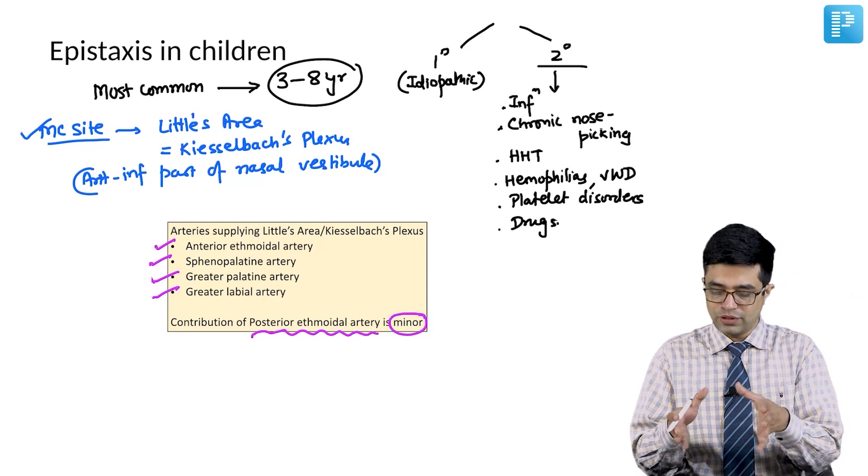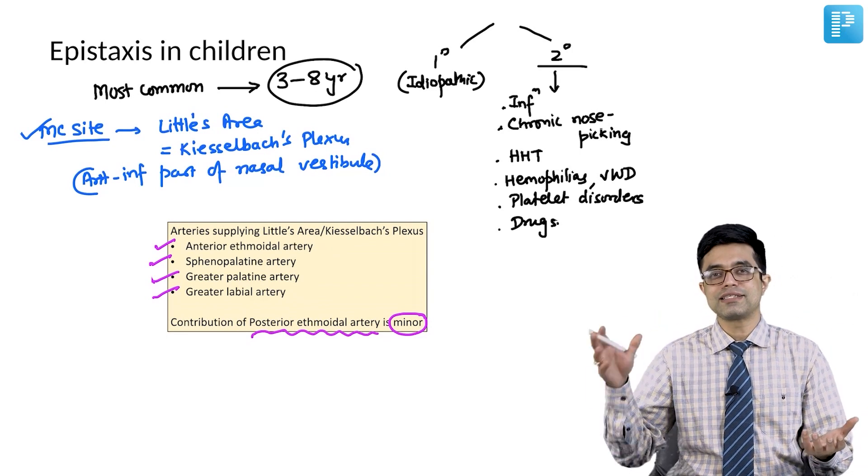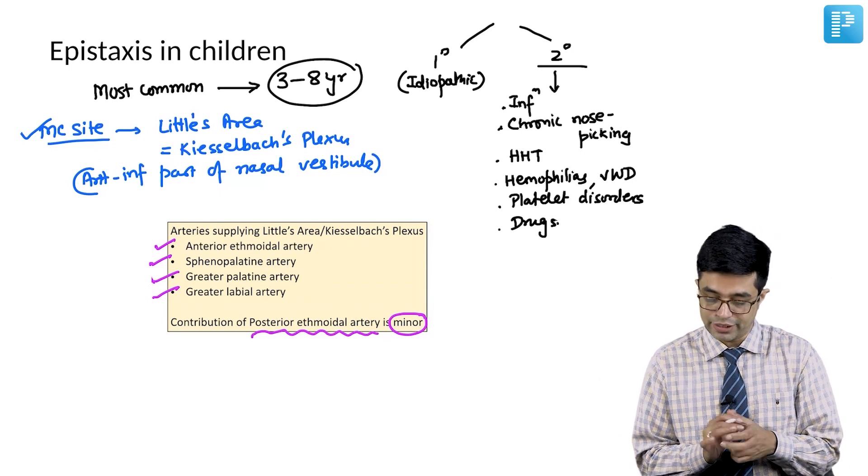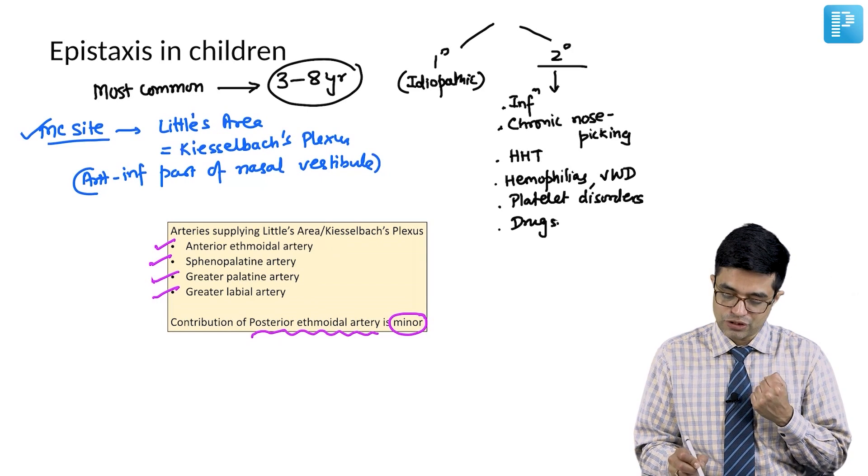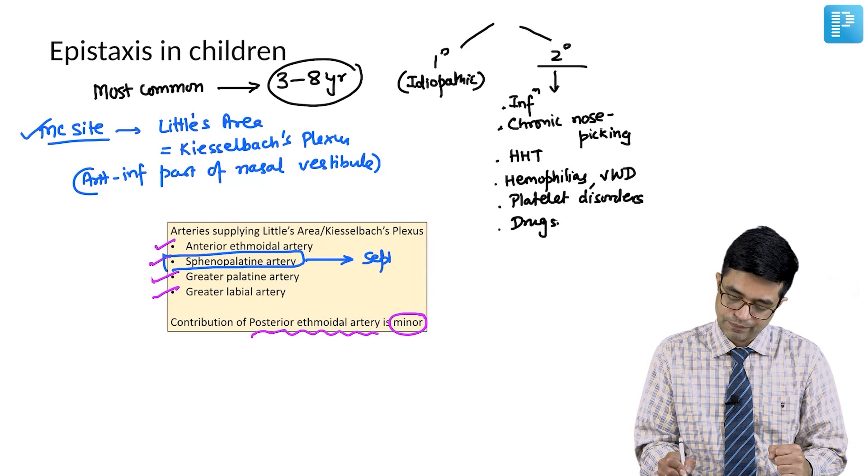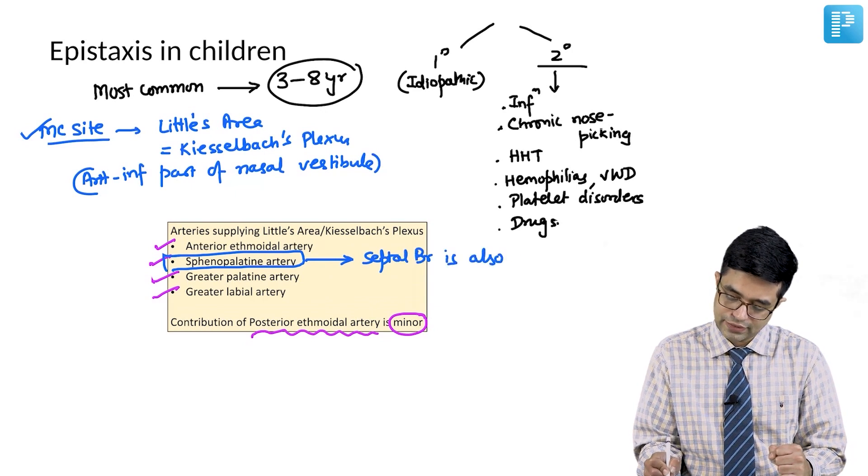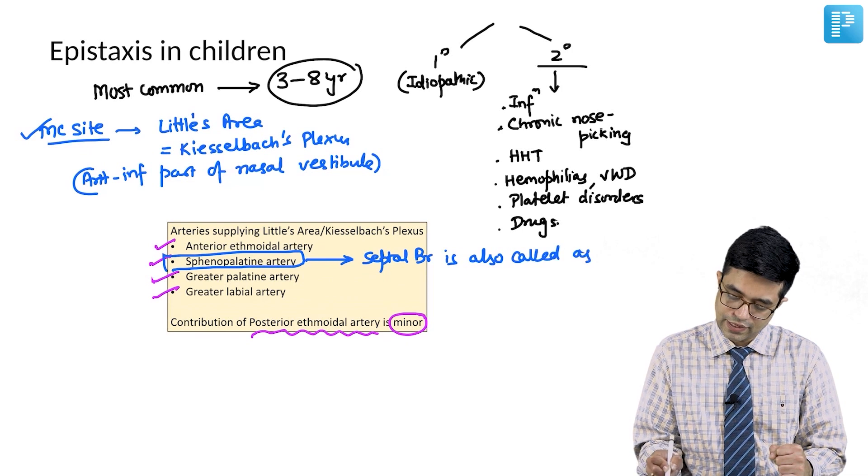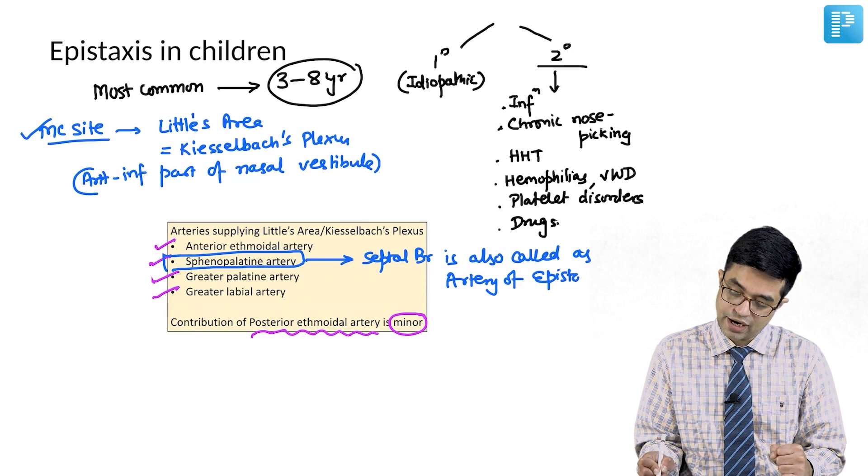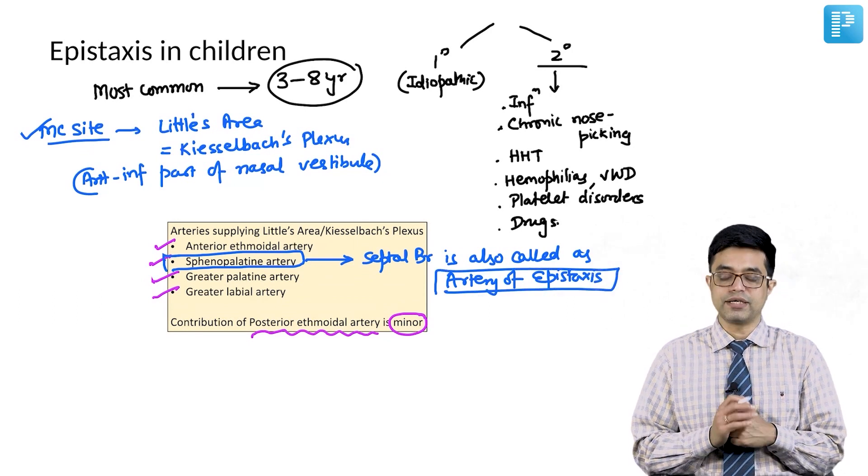If you remember anatomy, these are branches of internal as well as external carotid arteries, so sometimes epistaxis can be life-threatening. Another potential MCQ one-liner: sphenopalatine artery, its septal branch is also called the artery of epistaxis in children. Which is the artery of epistaxis? The answer will be sphenopalatine artery.